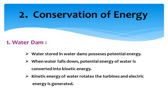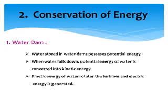As we saw about potential energy, the water is stored in the dam and it is not moving — it is potential energy. When the water is released from the dam to a nearby reservoir, it becomes kinetic energy because it is moving from one place to another. When water falls down, the potential energy of water is converted into kinetic energy.